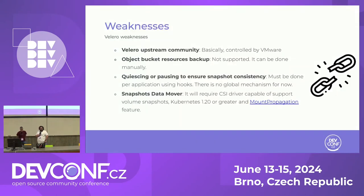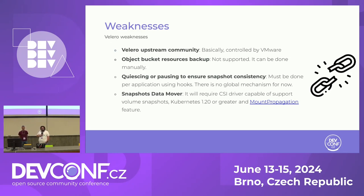As with everything in life, Velero has its weaknesses. Among them, we can point out: the first is a great dependence on work being done in the Velero community. Another weakness is there is no support for backing up resources in other storage — these backups have to be done manually for the moment. To ensure the consistency of backup data, it is necessary to take into account application quiescing. It is necessary to use hooks to pause applications and ensure the consistency of the data.